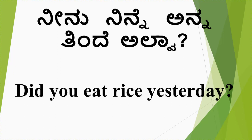Did you eat rice yesterday? When you use 'did', the verb will be in the present form. If you don't use 'did', you say 'you ate rice yesterday.' When you use 'did' at the beginning, you have to use 'eat' — so: did you eat rice yesterday? Or else you can say 'you ate,' which is the past tense form of the verb. You ate rice yesterday.